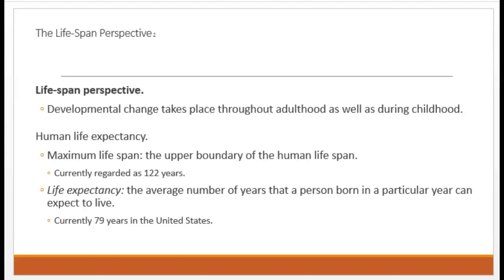We now understand that developmental change takes place throughout adulthood as well as during childhood, and there is plenty of adulthood to explore. We know that humans can live up to 122 years, which is considered the maximum lifespan, although the life expectancy is closer to 79 years. Life expectancy is the average number of years that a person born in a particular year can expect to live. Health care, nutrition, living conditions, genetics, and other factors can all contribute to a person's life expectancy.